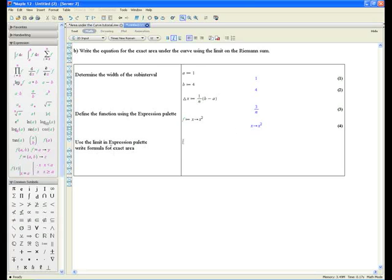Use the limit in the expression palette and write out the formula for the exact area. So the exact area we can denote as a equals the limit as n and press tab to go to the right. As n goes to infinity. The infinity symbol, as we know, you can go to the common symbols palette. As n goes to infinity. Press tab again.